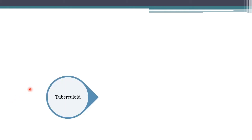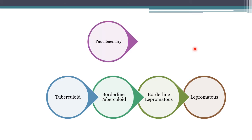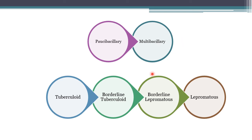Leprosy is classified into four types: tuberculoid leprosy (normal cell-mediated immunity), borderline tuberculoid, borderline lepromatous, and lepromatous leprosy (decreased cell-mediated immunity — the most severe form). It can also be divided into paucibacillary (few bacilli, non-infectious — includes tuberculoid and borderline tuberculoid) and multibacillary (large bacillary load, infectious — includes borderline lepromatous and lepromatous leprosy).